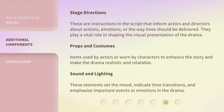Props and Costumes: Items used by actors or worn by characters to enhance the story and make the drama realistic and relatable. Sound and Lighting: These elements set the mood, indicate time transitions, and emphasize important events or emotions in the drama.